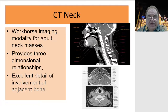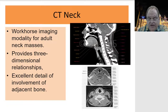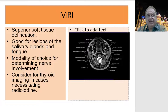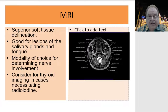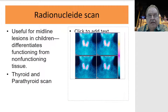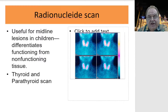CT of the neck is the workhorse for neck swelling evaluation. It provides three-dimensional relationships, and especially its relation to bone is very important to be seen on CT scan. MRI is mainly for soft tissue — especially for tongue swellings or salivary gland pathology. If you are planning contrast imaging for a patient with thyroid swelling, it is better to go for MRI rather than CT scan.